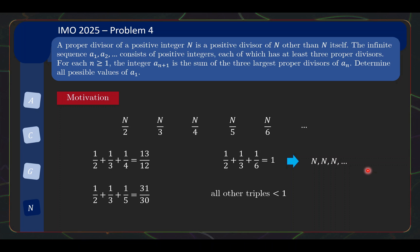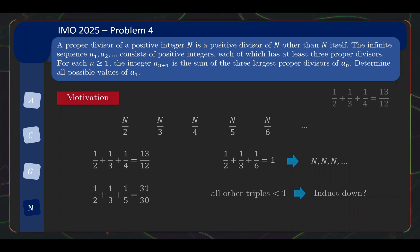Now for any other triplets that you select, you will actually get a sum of fractions that is less than 1. So this suggests the possibility of inducting downwards — maybe you start with some n not among these 3 cases, then you will end up with the next term being smaller, and if you already know the result for that smaller number then you will know the result for the original number.